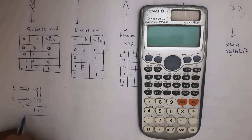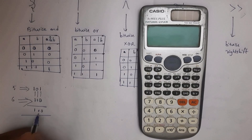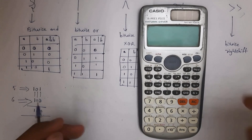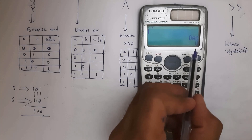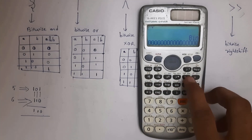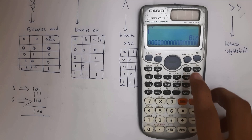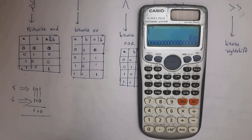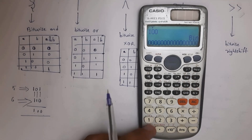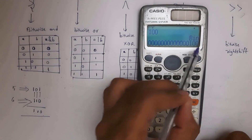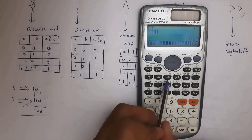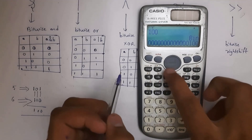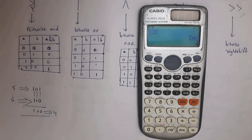Converting binary 100 back to decimal gives 4. So, 5 & 6 = 4. You can use a calculator in base/binary mode to perform these conversions: enter the binary number, then switch to decimal to confirm the result.